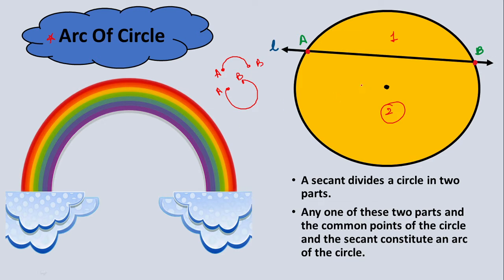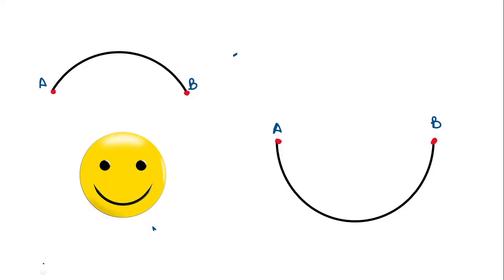When a secant cuts a circle into two parts, if you pick any of those cut parts along with its end points, that will be called the arc of the circle. In the last example we discussed the rainbow, which is the most natural example. The upper arc and the lower arc are both called arc AB. Another example everyone carries is your smile — a smile is also a kind of arc.